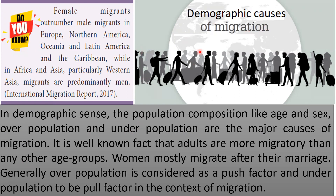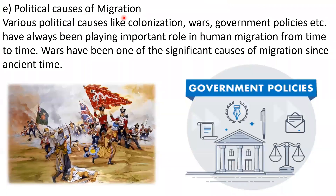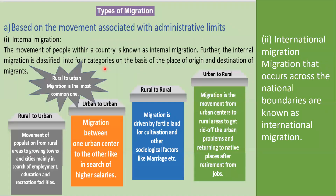The demographic causes of migration: in a demographic sense, population composition like age and sex, overpopulation, and underpopulation are the major causes of migration. Adults are more migratory than other age groups, and women mostly migrate after their marriage. Overpopulation is considered a push factor and underpopulation is considered a pull factor for migration. Various political causes like colonization, wars, and government policies have always played an important role in human migration from time to time. Wars have been one of the significant causes of migration since ancient times.